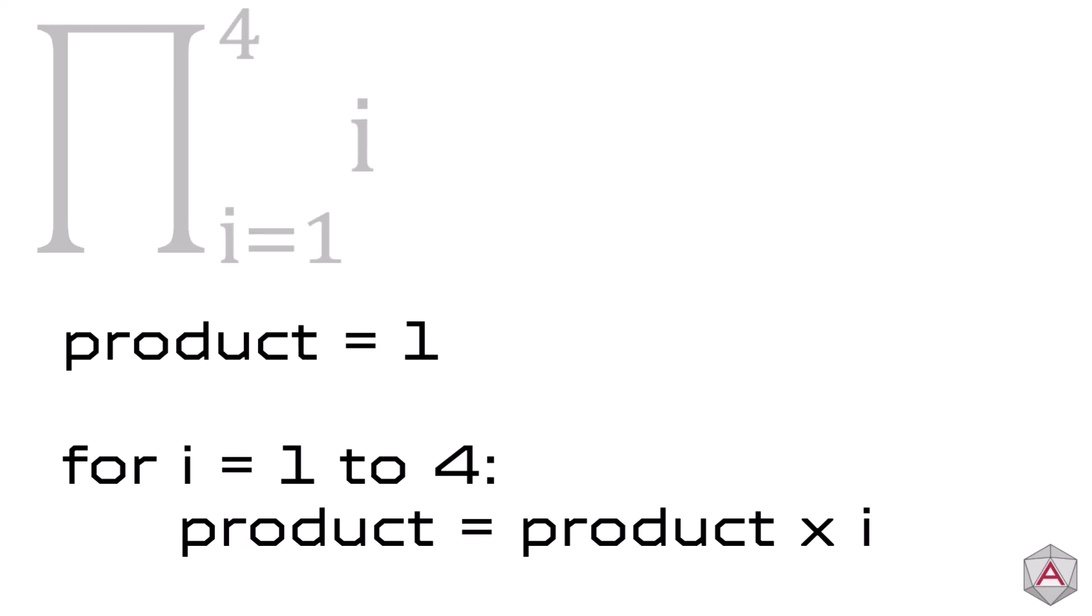Essentially, uppercase sigma and uppercase pi work the same, except sigma is asking you to add all the numbers, and pi wants you to multiply them.